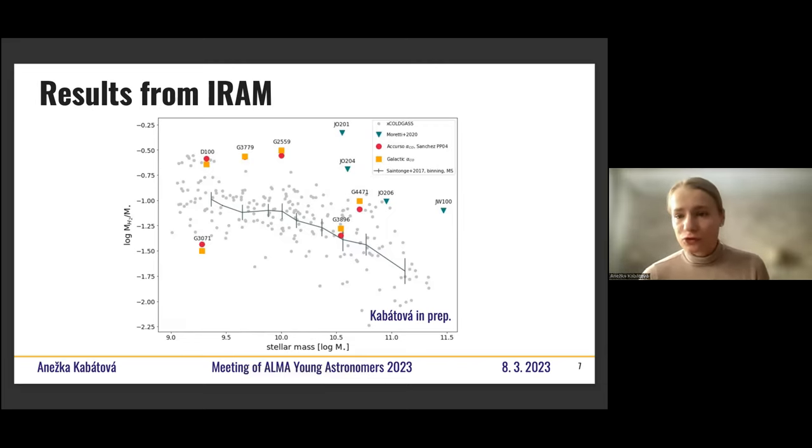And my sample is in yellow and red. So why are there two points for each of my galaxies? It's because you might know that there's kind of a debate about converting the CO luminosity to the H2 mass. So we used both the galactic value, the standard one, which is in yellow, and then in red, there's the metallicity-dependent conversion factor by Accurso. So you can see that there are some slight differences using the two methods.